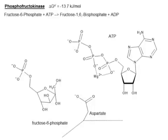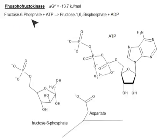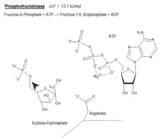The third reaction of glycolysis is mediated by the enzyme phosphofructokinase — a kinase that phosphorylates phosphofructose. Fructose 6-phosphate, which we just got from our phosphoglucose isomerase reaction, is going to react with ATP to become phosphorylated to fructose 1,6-bisphosphate, so it's going to have two phosphates.